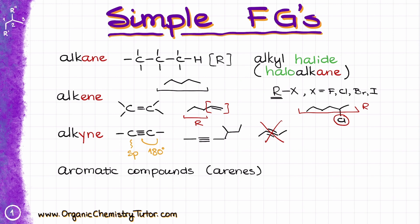One other simple hydrocarbon we are going to see is arenes, or aromatic compounds. Until you hit aromatic chemistry in your course, this is going to be just a simple six-membered ring with alternating double bonds. Occasionally you might see a different structure where we have a single ring with a donut inside — sometimes called fried eggs. Many instructors prefer you draw the alternating double bond structure, but it's good to know both. Check with what your instructor is doing before drawing circles.